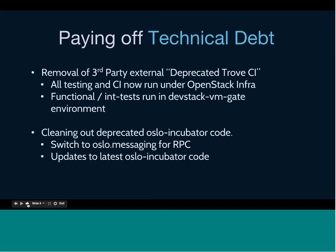The other thing we did in Kilo was pay off technical debt we had accumulated previously. We used to have a Trove CI that ran as third-party CI called the Deprecated Trove CI — we've gone ahead and removed that. All testing is done under OpenStack infra now after Kilo. Functional and int-tests run as a DevStack VM in the OpenStack gate environment as a functional job. Unit tests also run completely under OpenStack infra. Apart from that, we cleaned out deprecated Oslo incubator code, moved to the latest Oslo code base, and switched to Oslo messaging for our RPC, replacing the older simple combo method.